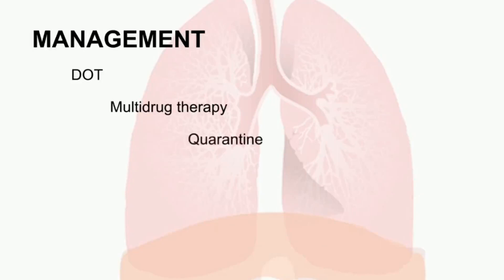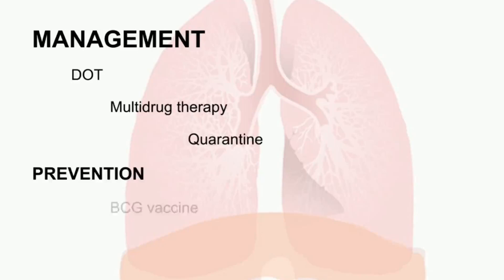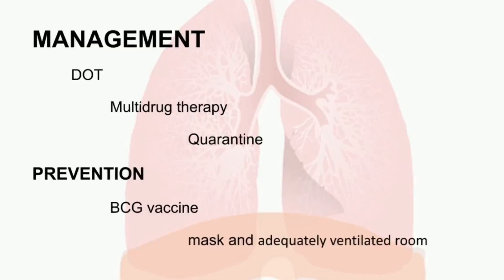Quarantine and isolation are important if you are in a hospital setting. The patient should use a mask. Infection control is necessary — in scattered areas where TB bacteria are present, precautions must be taken to protect all people.